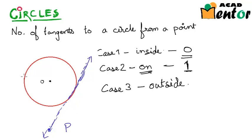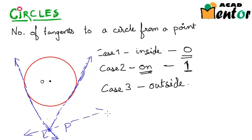Can we draw another line? Yes — a line passing through point P that is also tangent to this circle. Can we draw a third tangent? No, we cannot. The rest would either be a secant or would just pass by the circle without touching it. So we can only draw two tangents when the point is outside the circle.